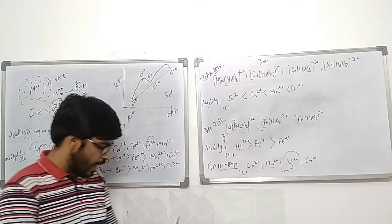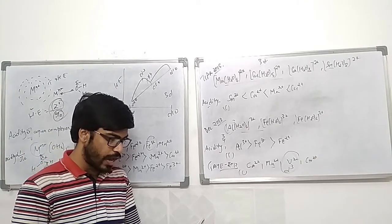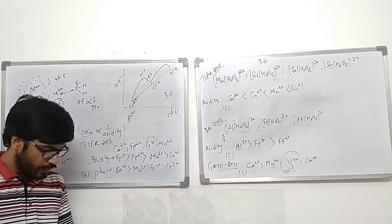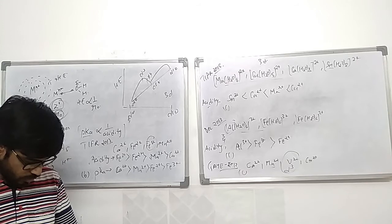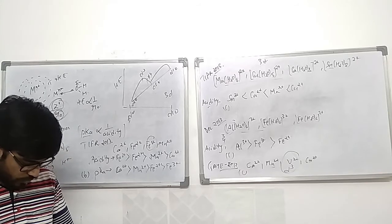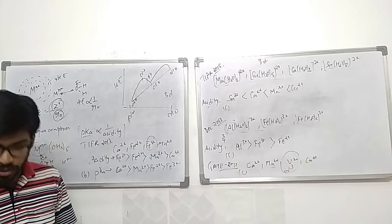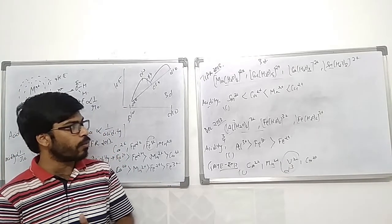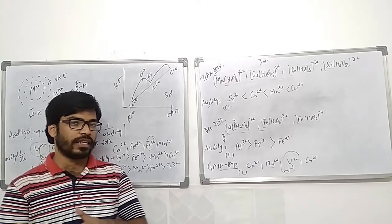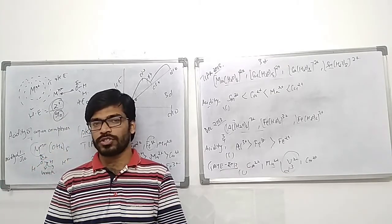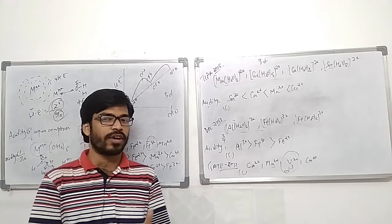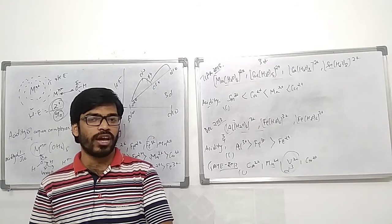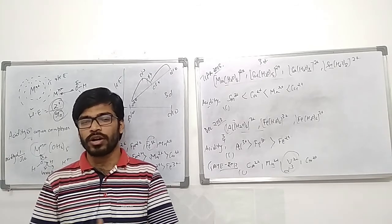That covers hydration enthalpy, lattice energy, and acidity of aqua complexes. This completes a major part of crystal field theory. The remaining topic is Jahn-Teller distortion, which will be discussed in the next video, followed by previous year questions, after which we will move on to molecular orbital theory for coordination complexes.